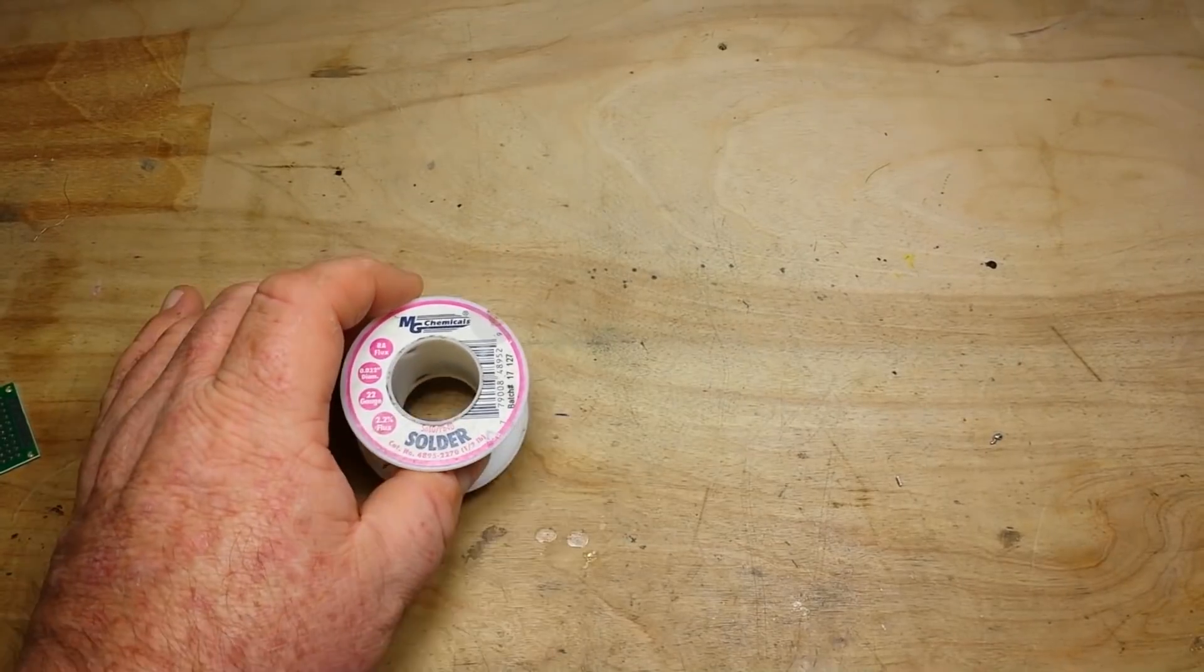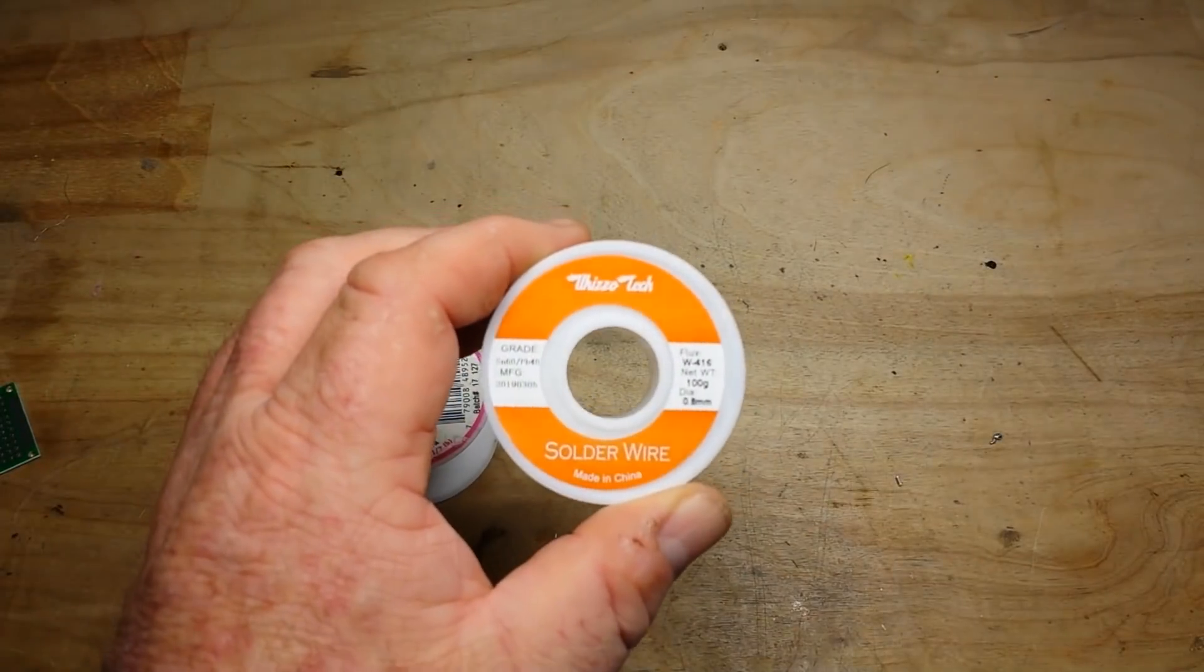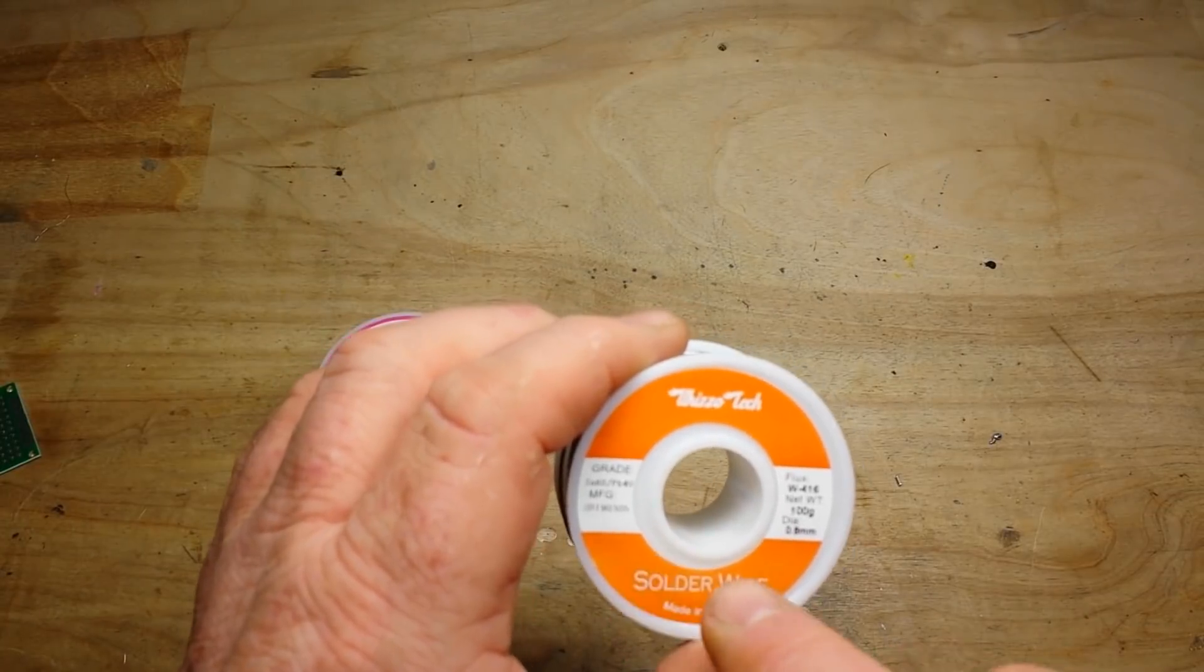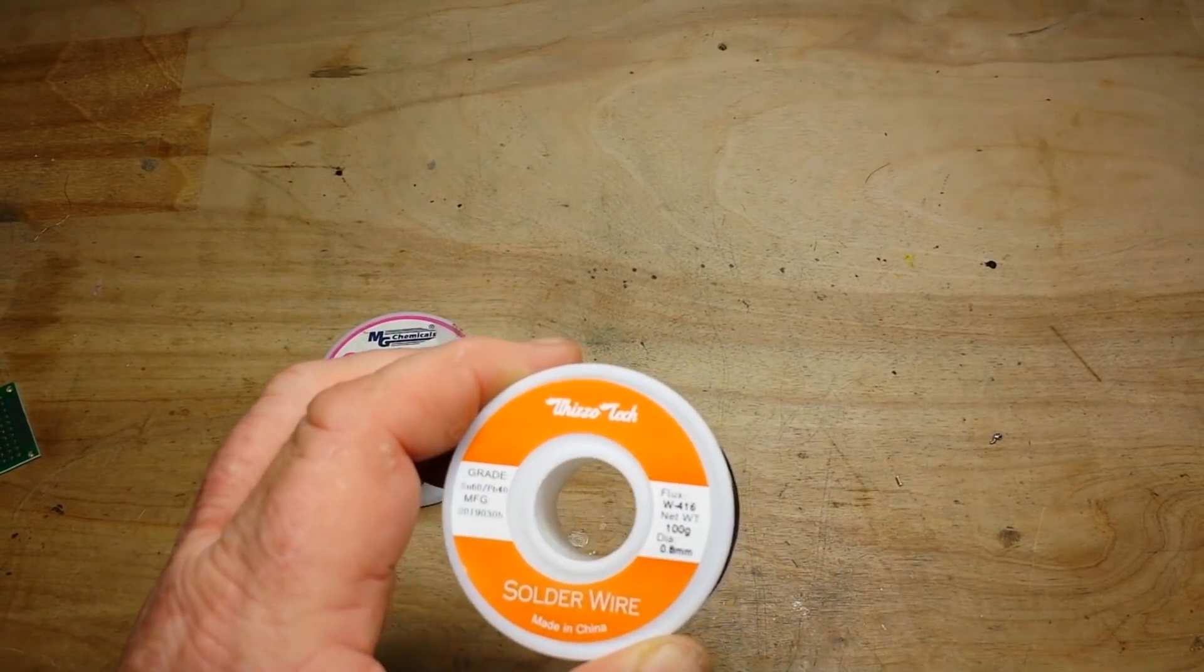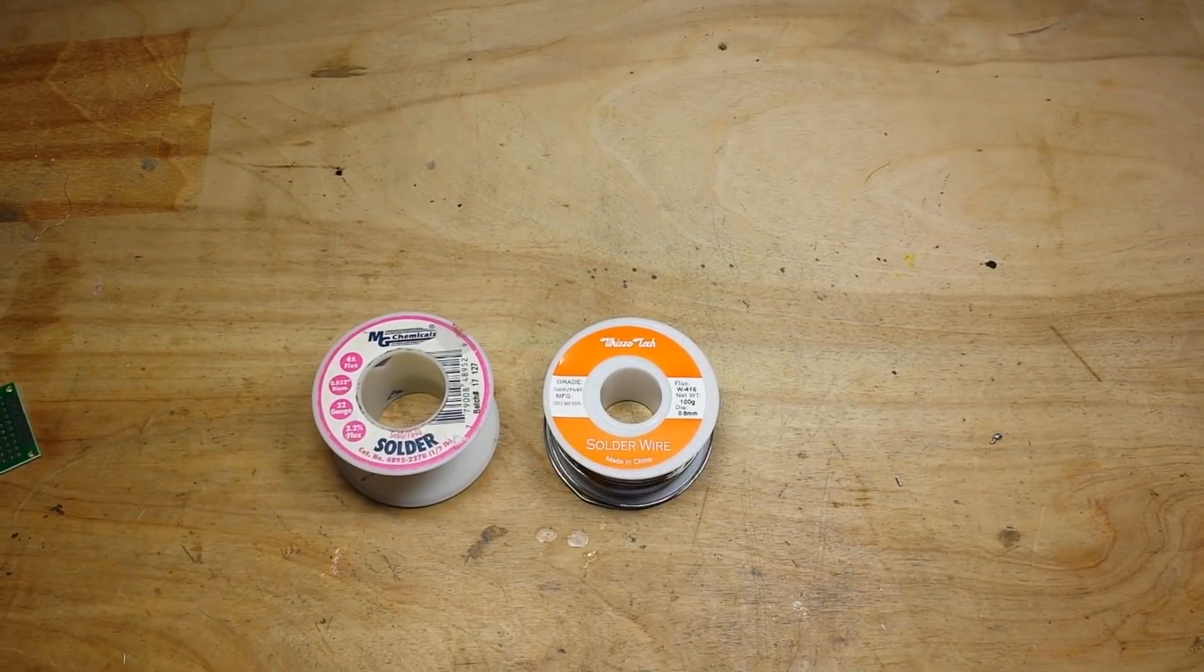So I got on Amazon, looked around, and found this Wizzotech solder wire. It's 60/40 and the same diameter, so I figured give it a try, right? See how it works.